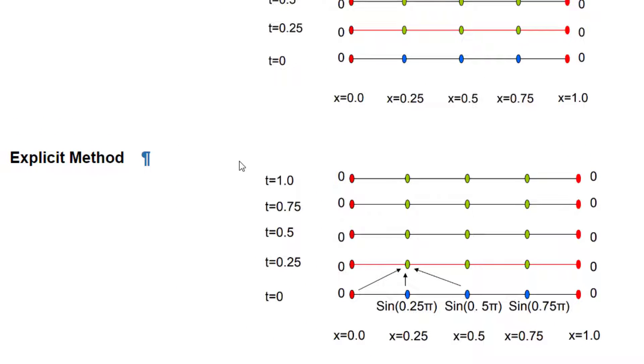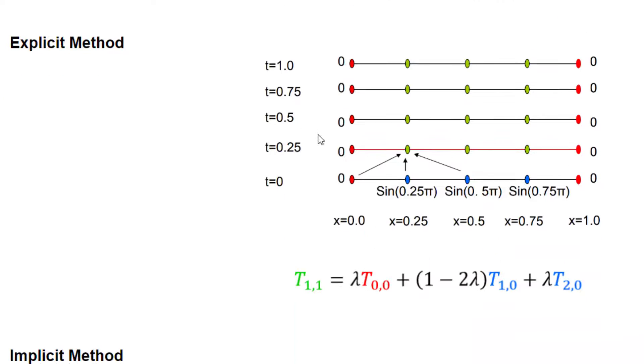One was the explicit method that we saw in an earlier video in which we had one equation that we used to solve for one unknown. So we used these three points below it to solve for the one unknown. And we wrote a for loop to go through each set of points and solve for each of the unknowns. Once you finish a row, we go to the next set.